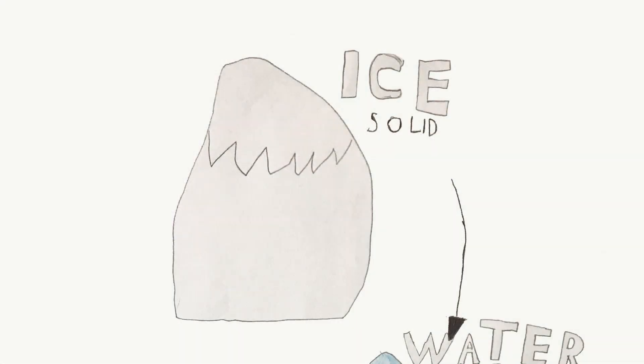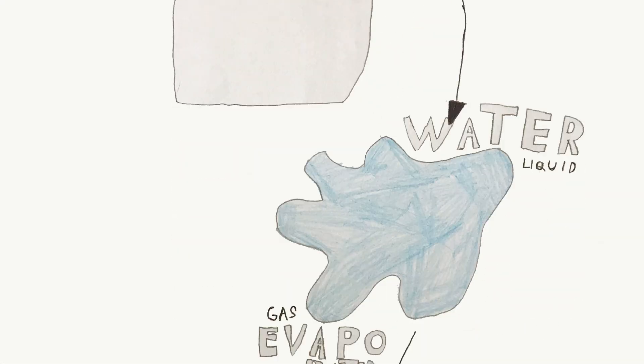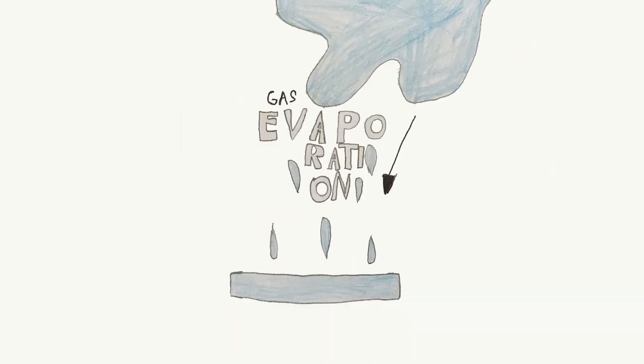Examples: solid water can be ice or snow. Liquid water can be rivers or oceans. Gas water can be clouds.